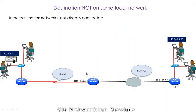Today we are going to discuss another scenario in which the destination is not on the local area network, and in addition to that, the destination network is not directly connected with the router or the default gateway. The destination is connected with the help of some other routers, and the connections between those routers use serial and Ethernet over MPLS (EoMPLS) — wide area network technologies we discussed in previous videos. So what happens when the destination is not directly connected with any of the router's interfaces?